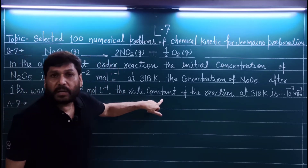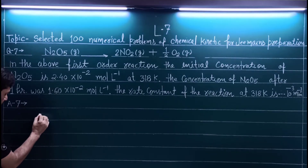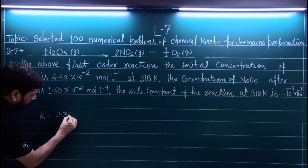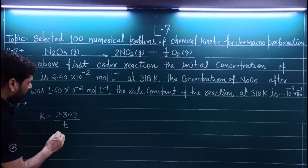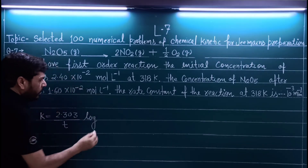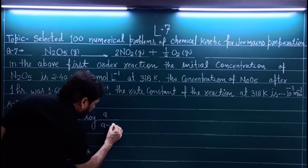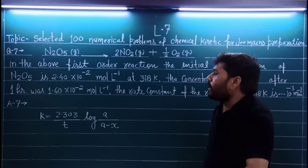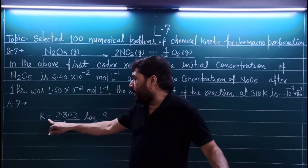We need to find the rate constant k. There is only one formula used for this. k is equal to 2.303 divided by t, multiplied by log of a upon (a minus x). Here k is the rate constant, t is time — which is given as 1 hour.